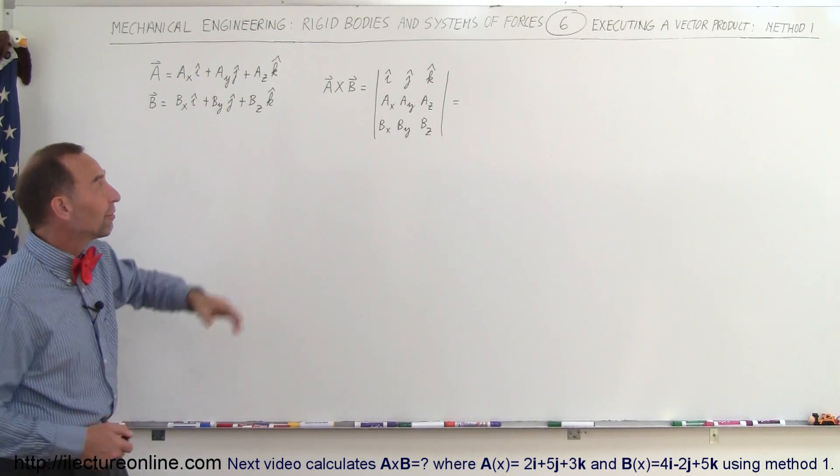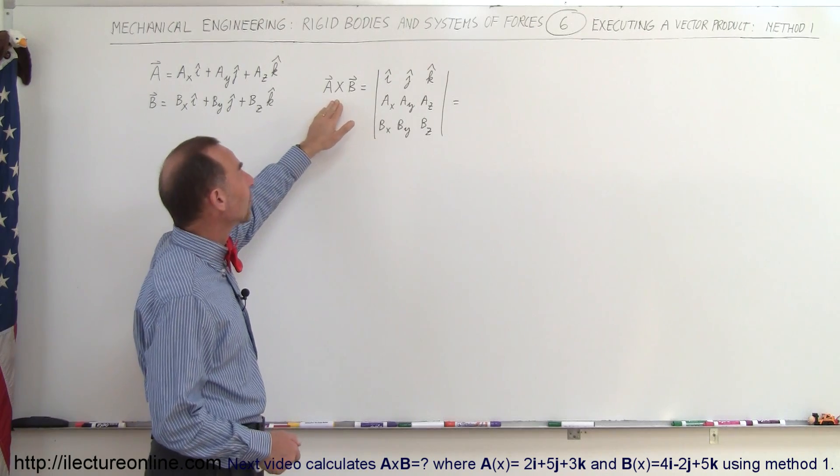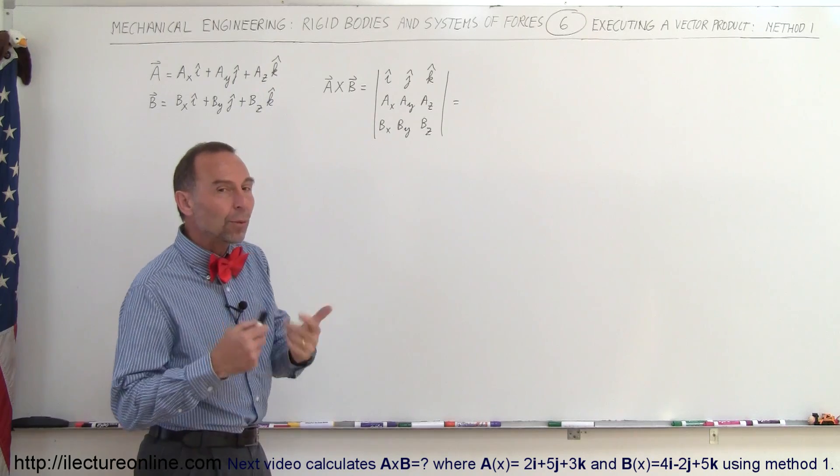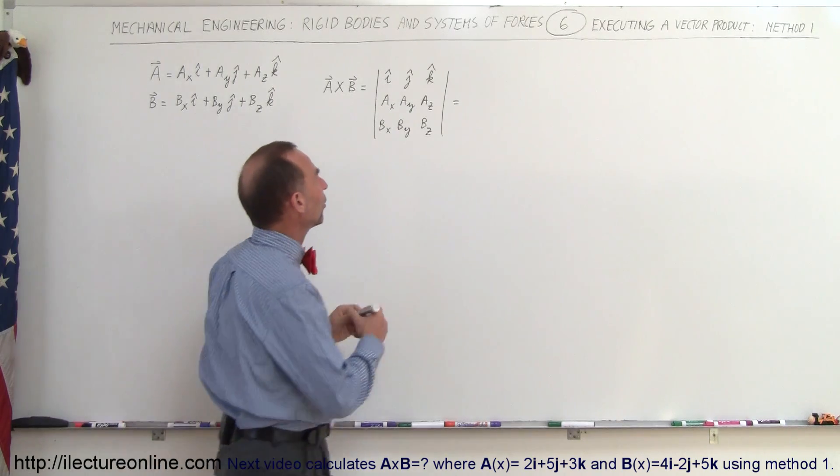So when we perform a vector product, we can write A cross B as a matrix like this, and the way we work out a matrix like this is as follows.